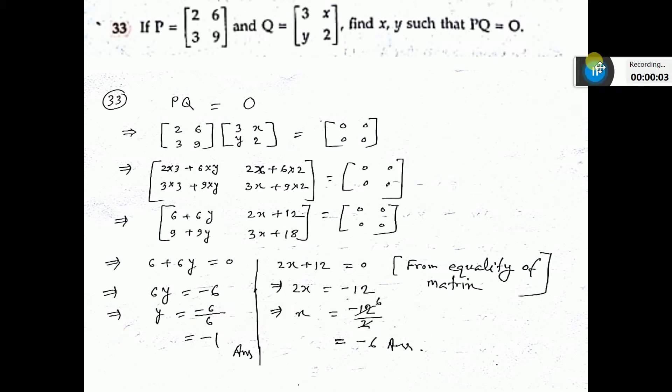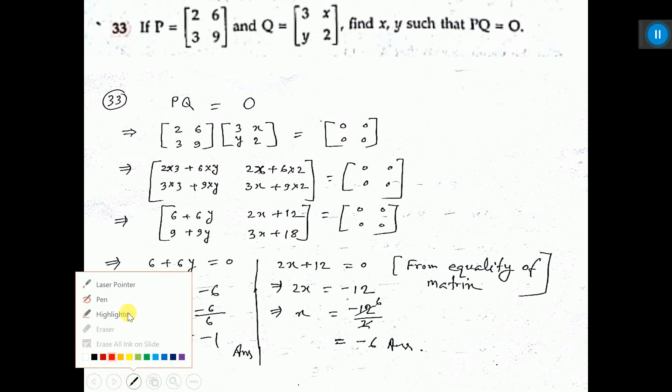Problem 33. Let me do this. Given PQ is equal to null matrix. You see it is written as a very big 0. This very big 0 means it is a null matrix.